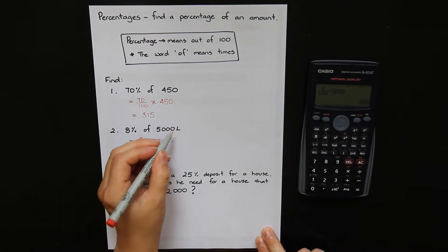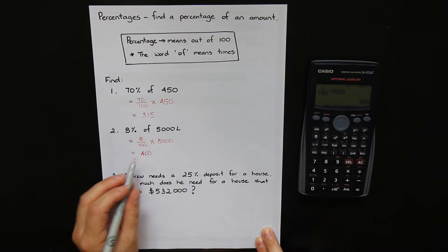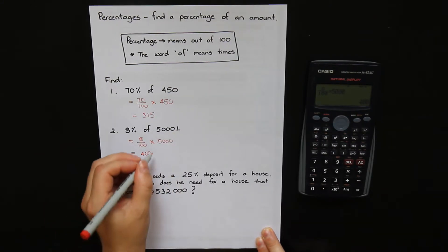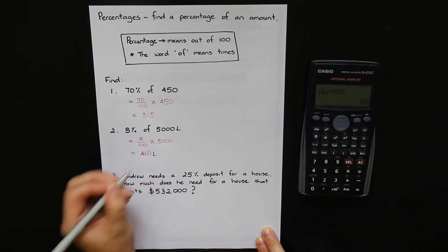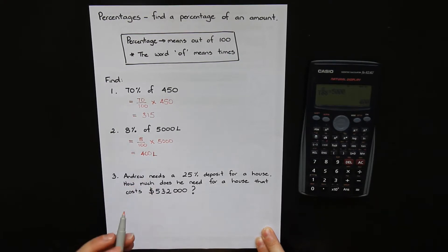Now in this question, we had some units in our question. It was 5000 litres. So we need to have units in our answer as well. It will be 400 litres. 8% of 5000 litres is 400 litres.